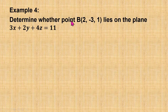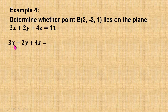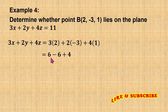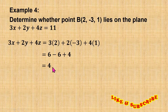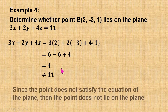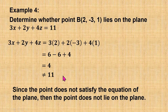Next, we determine whether the point B lies on the given plane. The equation of the plane is in Cartesian form. We substitute the values of x, y, and z from the coordinate point and simplify — the result is equal to 4. Comparing with the equation of the plane, it is not equal to 11. Since the coordinate point does not satisfy the equation of the plane, we conclude that the point does not lie on the plane.